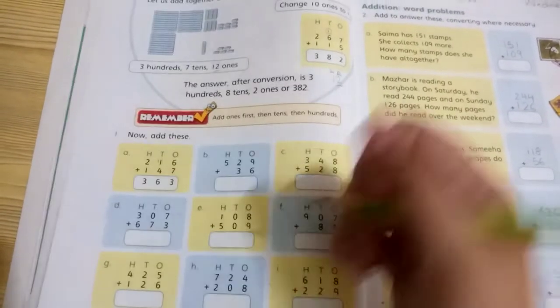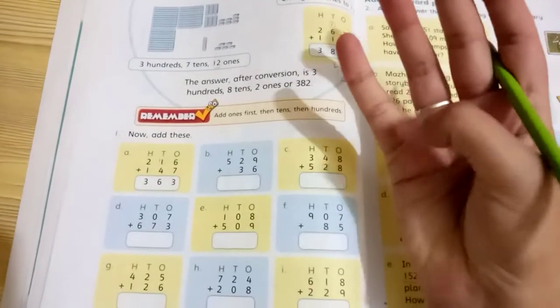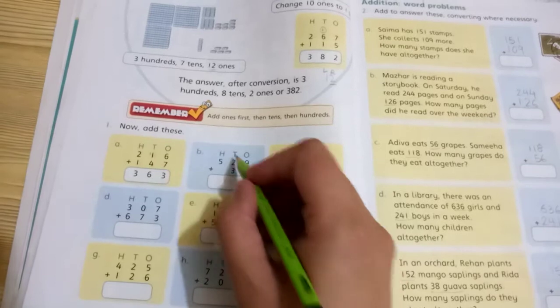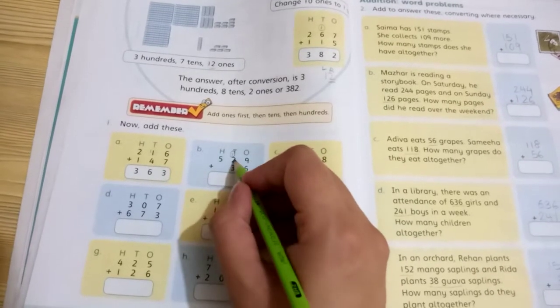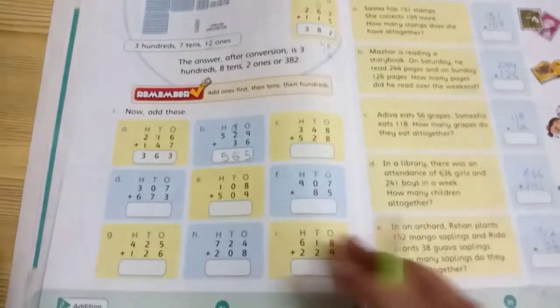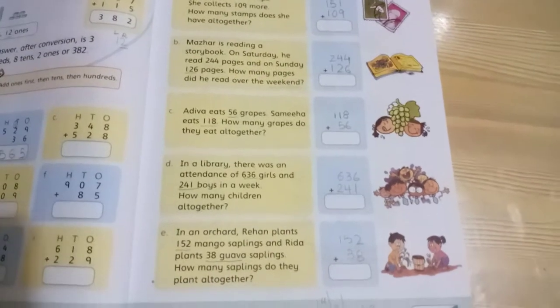Next one: add 6 to 9. After 9: 10, 11, 12, 13, 14, 15. So 15, write 5 here, carry 1 goes. 3 plus 2 equals 5, plus 1 equals 6. And 5 comes down as is. Similarly, you will add up the remaining sums.